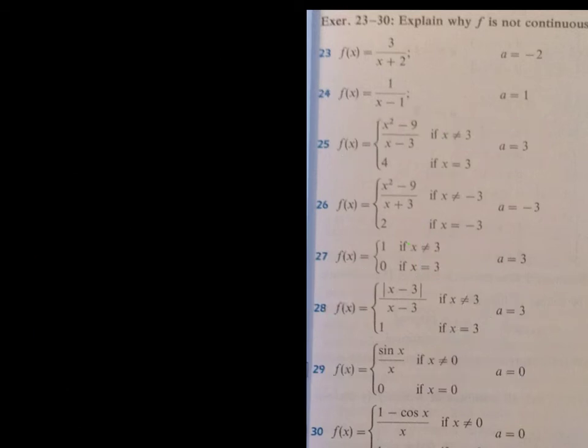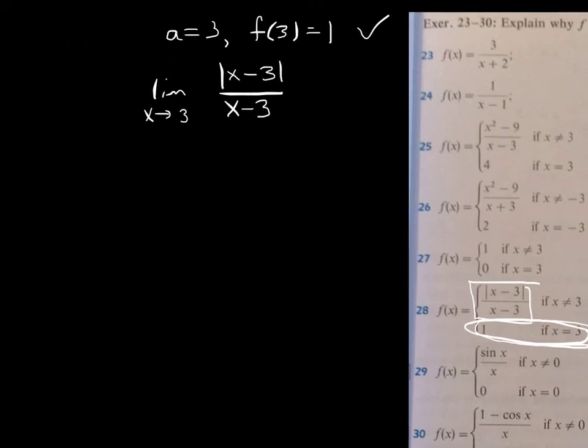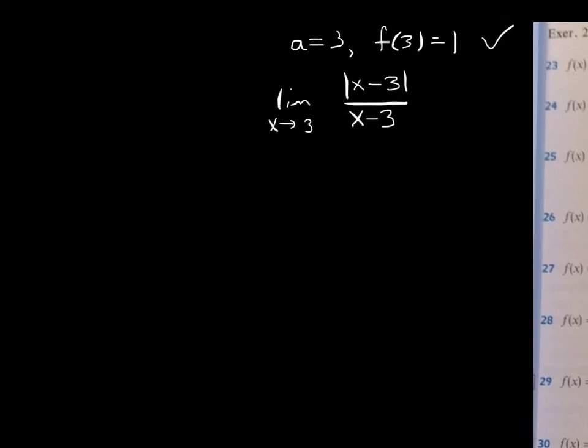Okay. So, we cleared out this screen. I want to look at number 28 here. Because, again, for number 28, we're looking at whether or not the function is continuous. And, the first thing is, a is 3. And, f(3), in this example, is given by this piece of the definition there. And, f(3) is 1. So, of course, that's okay. All right? The next thing we have to do is figure out the limit as x goes to 3 of f(x). And, that means we're using this formula right here. So, we're evaluating limit x goes to 3 of the absolute value of x minus 3 over x minus 3.